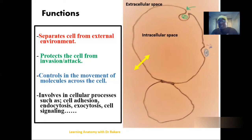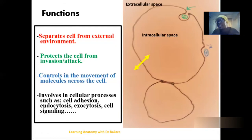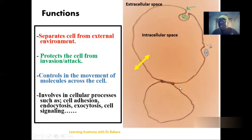Cell membranes are also involved in a number of cellular processes, including cell adhesion. Cell adhesion is the process through which cells form contact with each other. A cell is able to link with another cell to form a lining, as seen mostly in the epithelium where cells line the interiors of cavities or surfaces. Cells form contact with each other through no other means except the cell membrane.